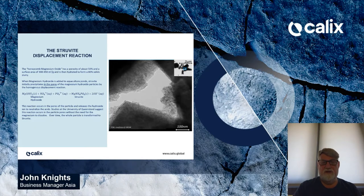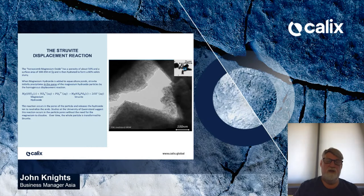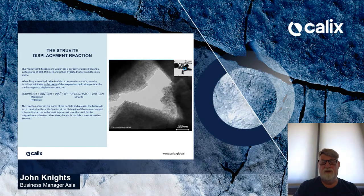The other important factor is surface area. In the case of our product we have 300 to 350 square meters per gram. This is nano-active. When active magnesium hydroxide in the form of Aquacal is added to the aquaculture pond, struvite initially precipitates in the pores of the active magnesium particles by the homogeneous struvite displacement reaction. We have magnesium hydroxide, ammonia from the digestion cycle, and phosphate from the food. This makes struvite — magnesium ammonium phosphate — and releases OH⁻ ions which pushes the digestion cycle more to the aerobic side.